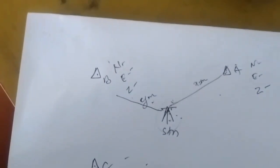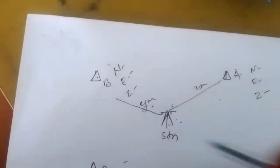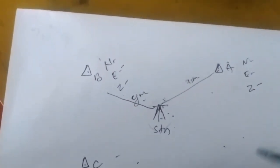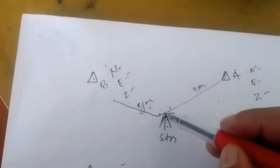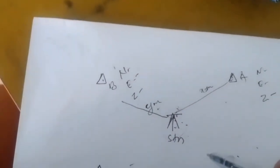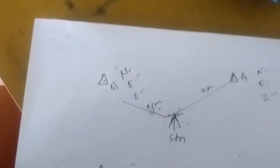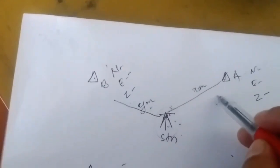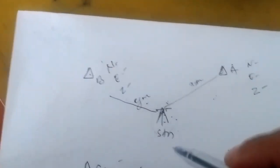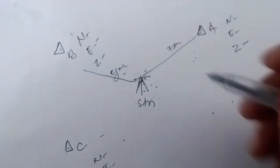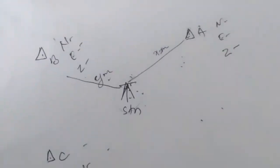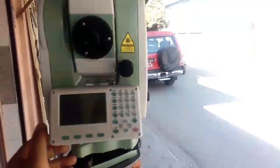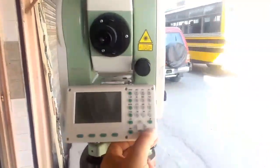Resection is limited to a maximum of five known points. Today we will see how resection is done using two point coordinates and distance, and also three point coordinates and distance. We are going to see how resection is done on the Sokkia R5 Total Station. Now let's begin the process on the total station.